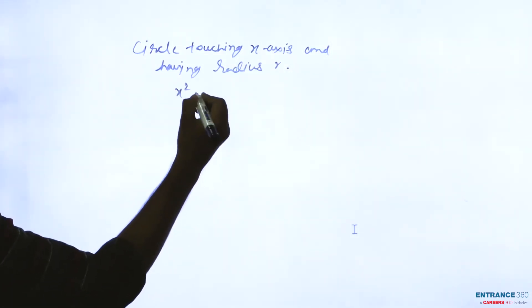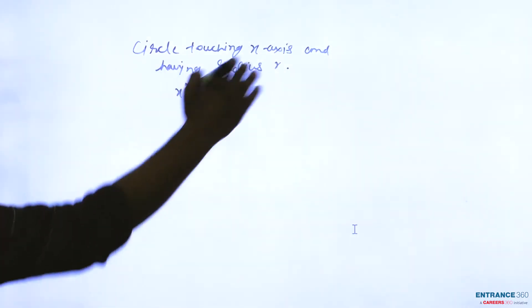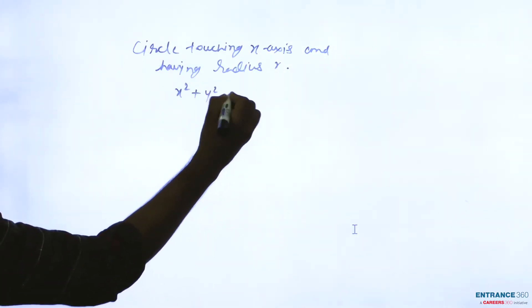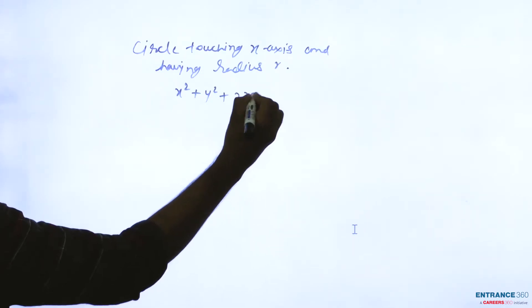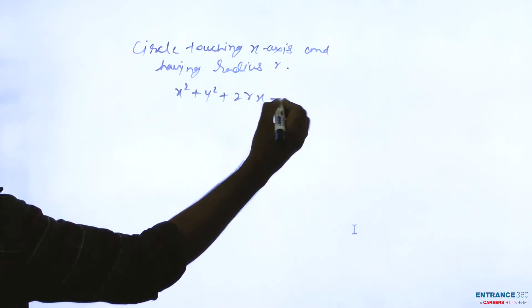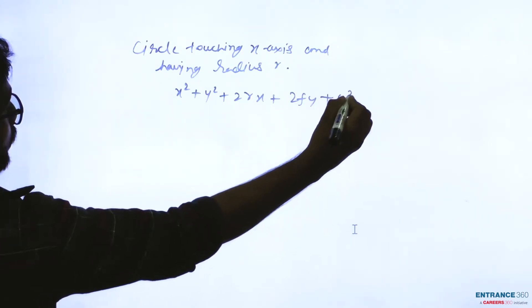Then you can write the equation of the circle: x² + y² + 2Rx + 2Fy + F² = 0.